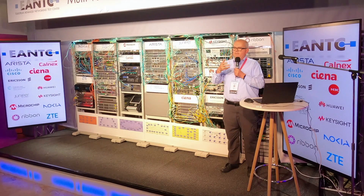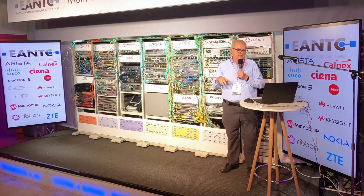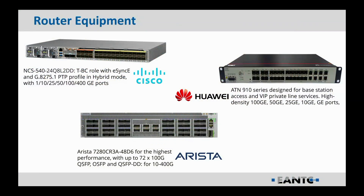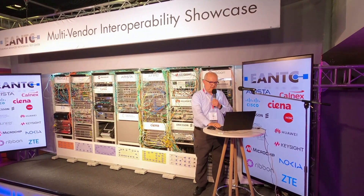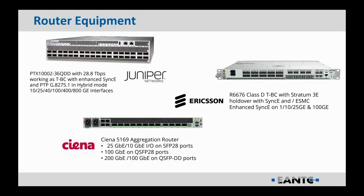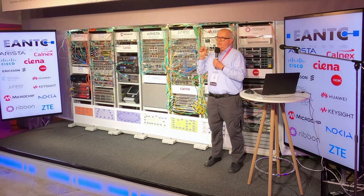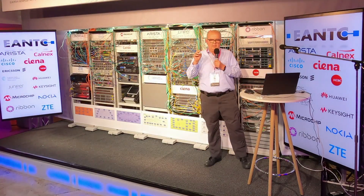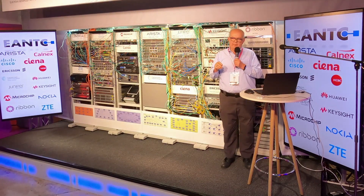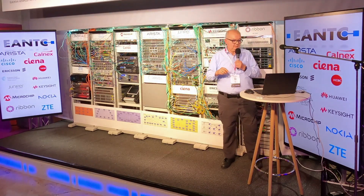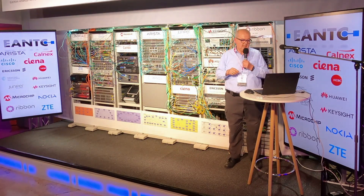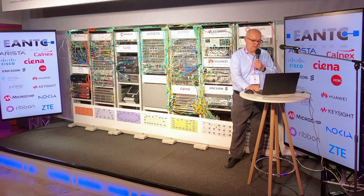From Cisco we have an NCS 540, we have an ATN 910 from Huawei, and a 7280 from Arista — these are all acting as boundary clocks using G.8275.1 profile as well as synchronous Ethernet. We also have a PTX 1002 from Juniper and an Ericsson 6676, again using PTP with G.8275.1 profile and synchronous Ethernet. To add profile interworking between PTP over IP and PTP layer two, we have a Ciena acting as a G.8275.2 slave — it's not getting SyncE but is participating in the network.